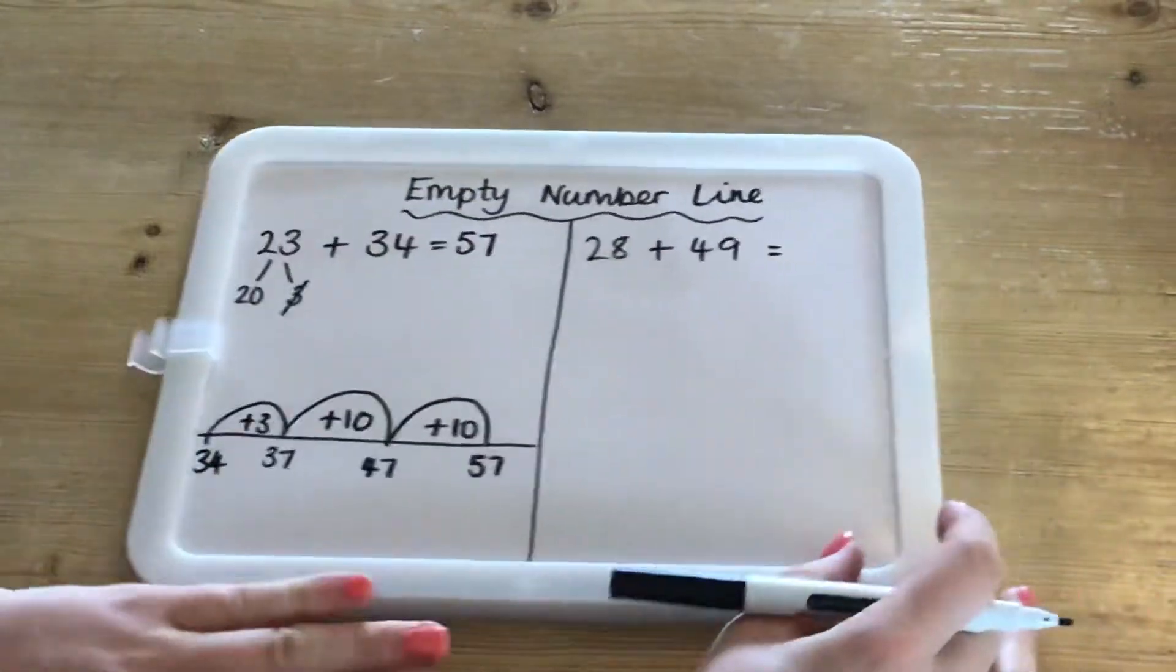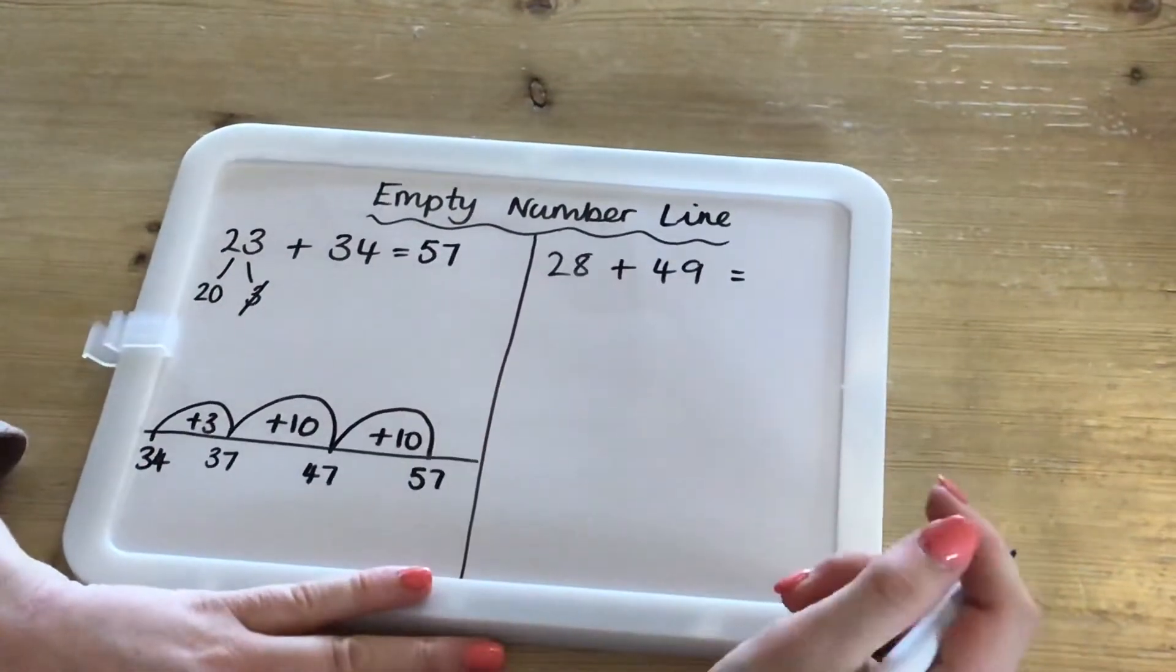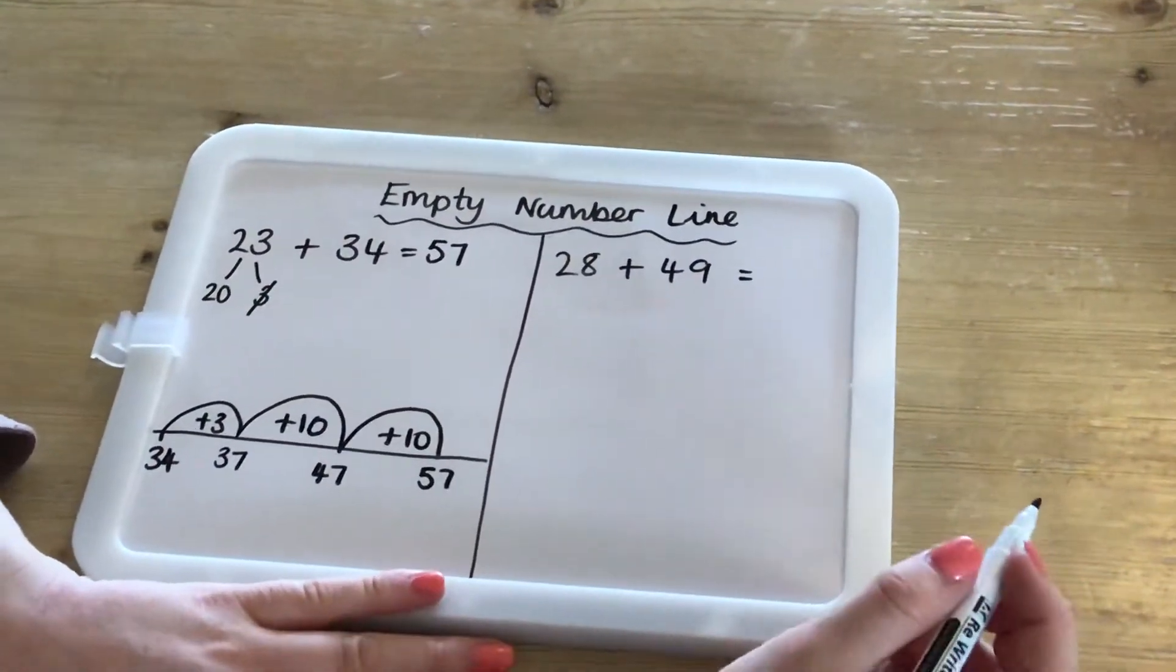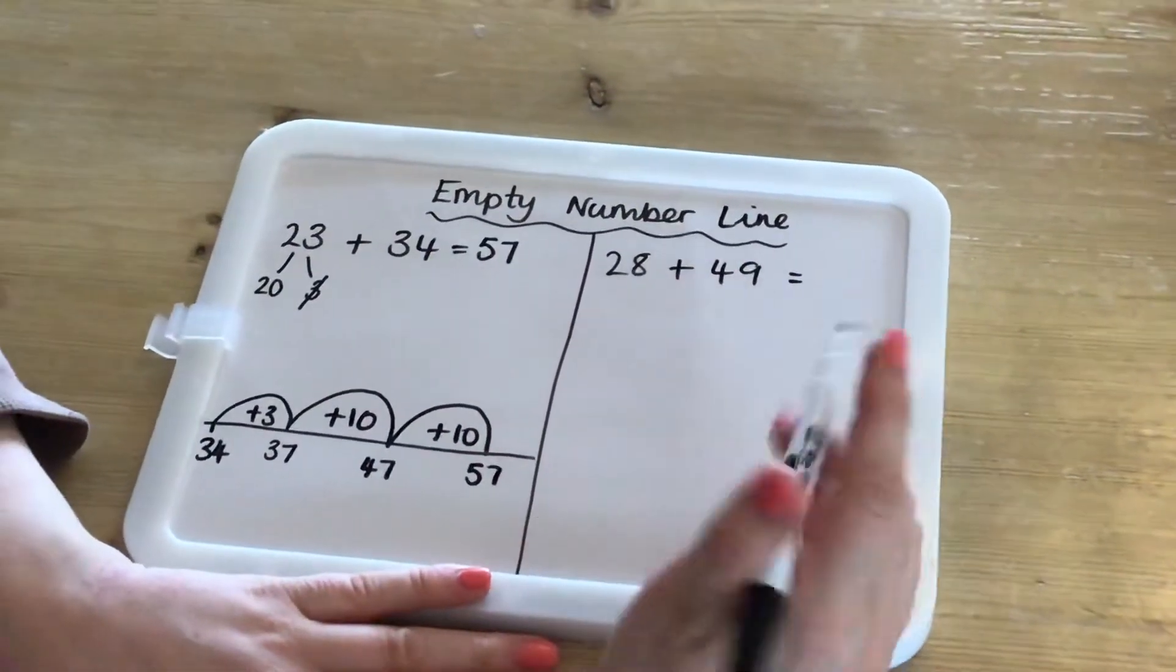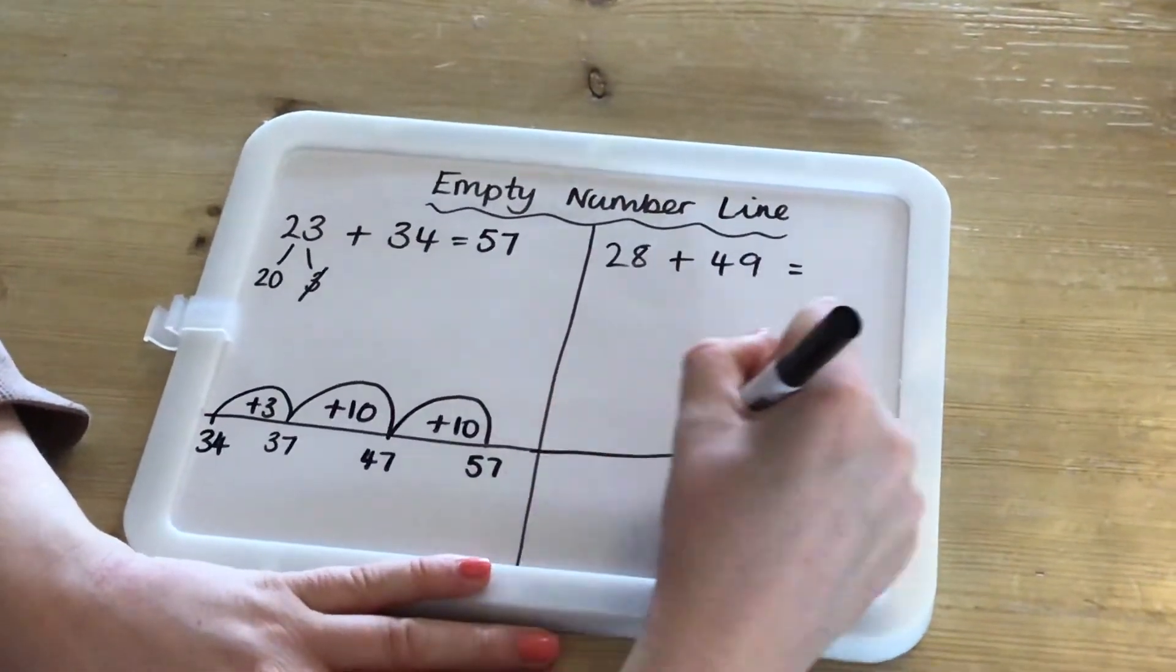Then, looking at this one, this one is slightly different because when you're adding here, you're going to be bridging tens. And I'm going to show you how we do that.